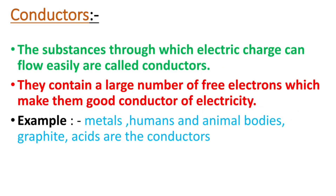Conductors. The substances through which electric charge can flow easily are called conductors. Conductors contain a large number of free electrons which make them good conductors of electricity.